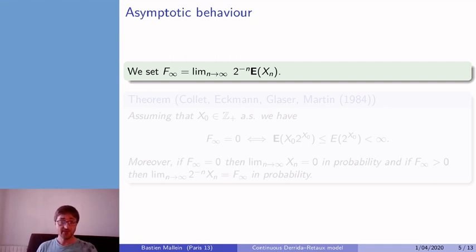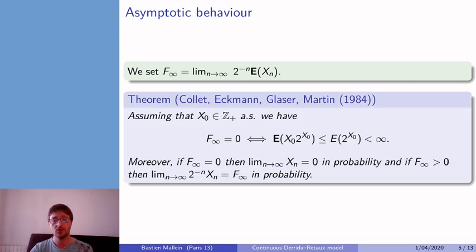We can observe that the quantity F∞, which is the limit as n goes to infinity of the expectation of Xₙ, the average number of cars leaving the tree, divided by 2ⁿ, this quantity always exists. Collet, Kermann, Glazer, and Martin showed that if X₀ is integer valued,